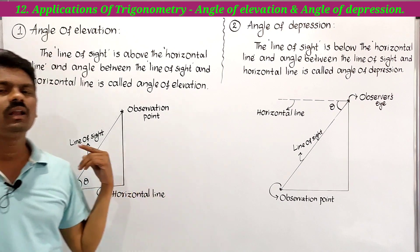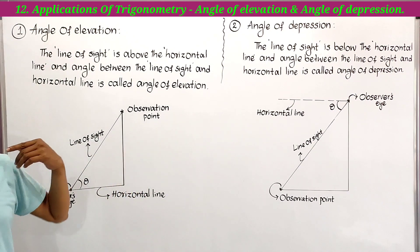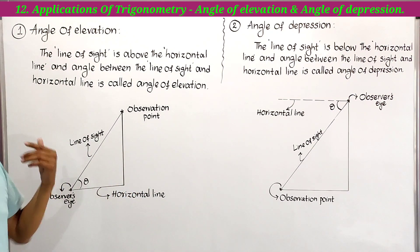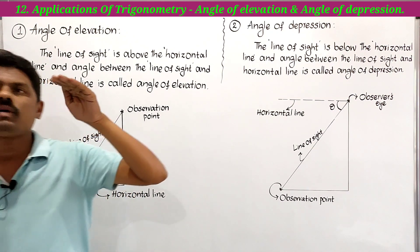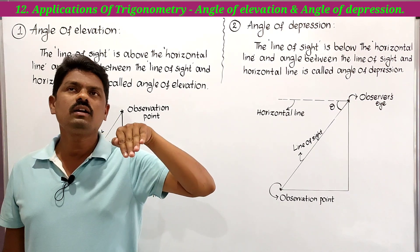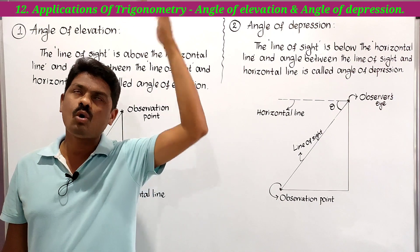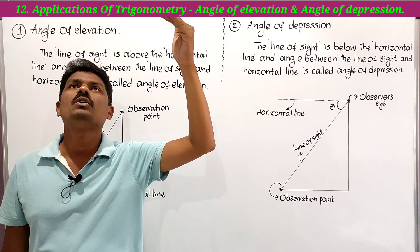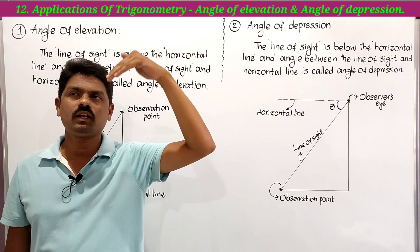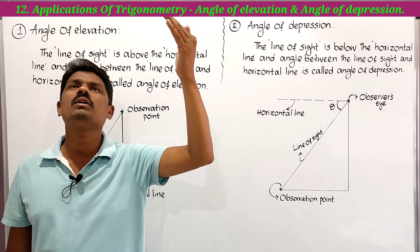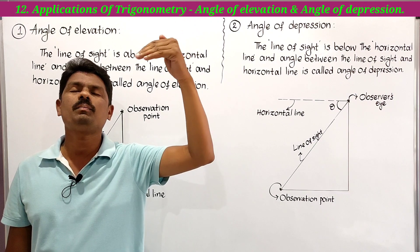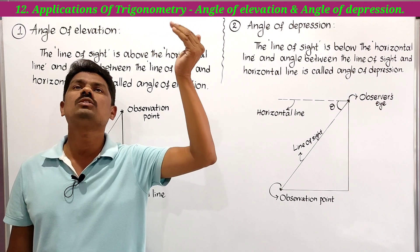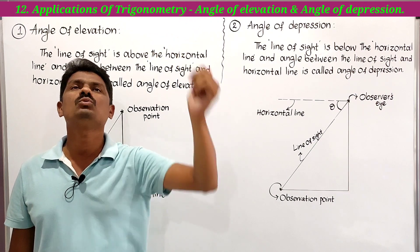When we want to observe an object that is above us, we look upward from our position. The line from our eye to the object we are observing is called the line of sight.